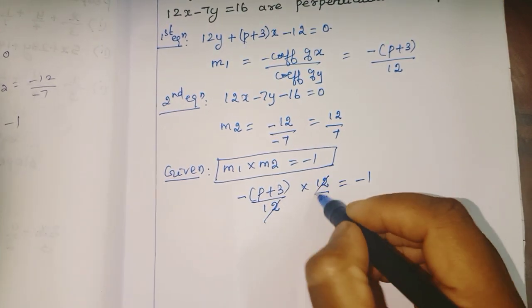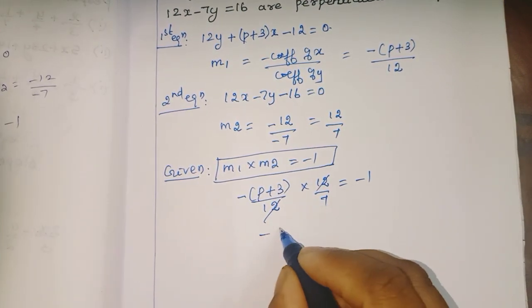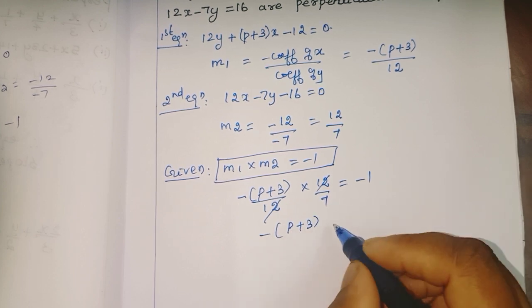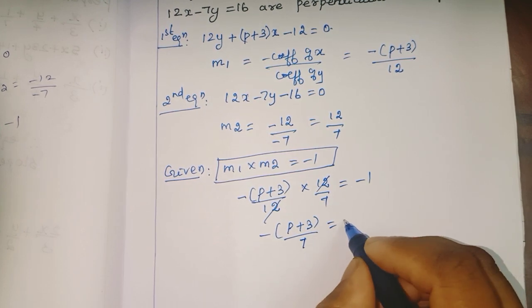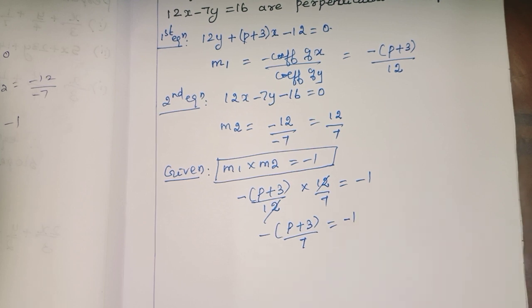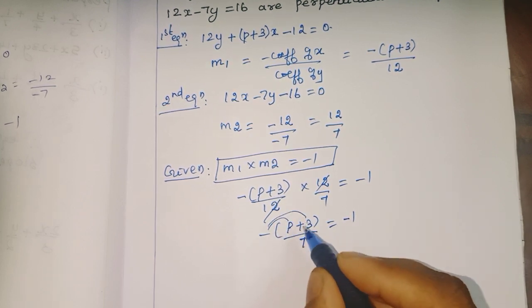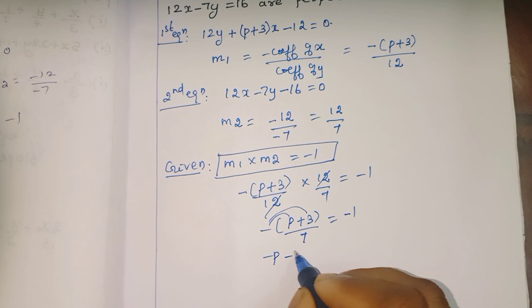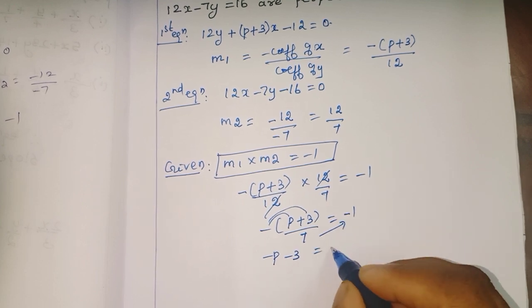The 12s cancel. -(p+3)/7 = -1. Multiplying both sides by -7: -p - 3 = -7, so -p = -7 + 3.